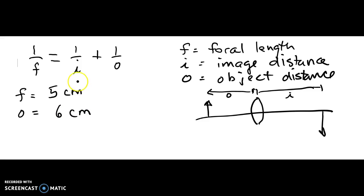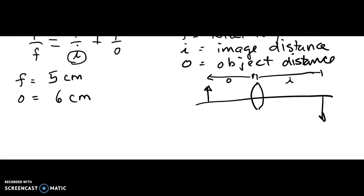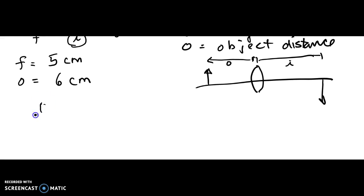So now I have to find I. So I'm going to replace my variables with the numbers. So 1 over 5, 1 over F is 1 over 5, equals 1 over I, my image distance I'm trying to find, plus 1 over O, which is 6.